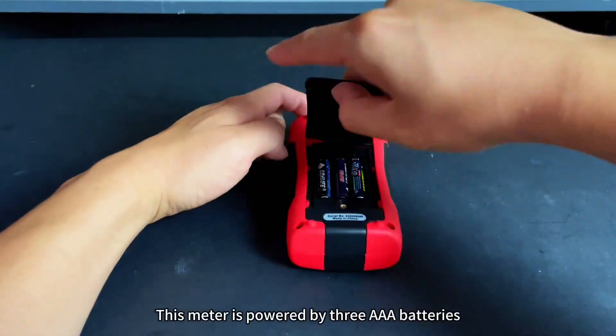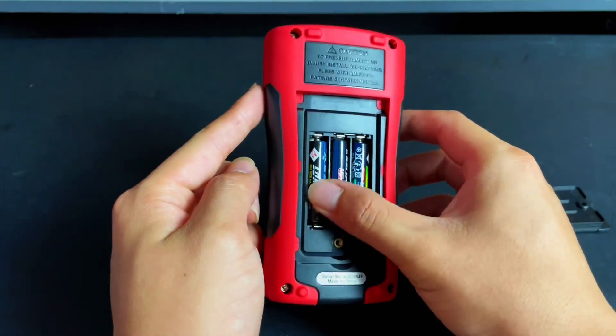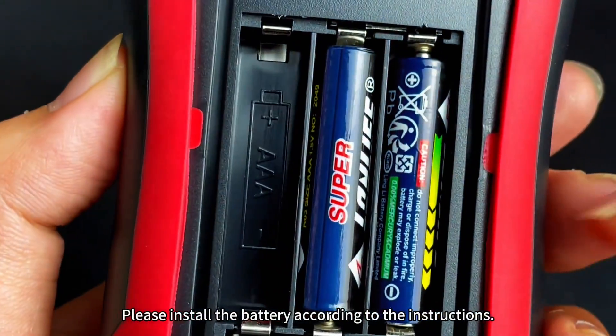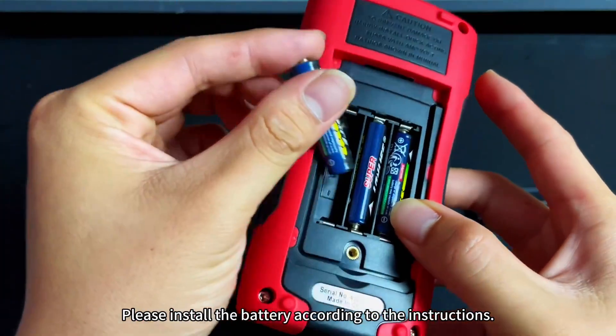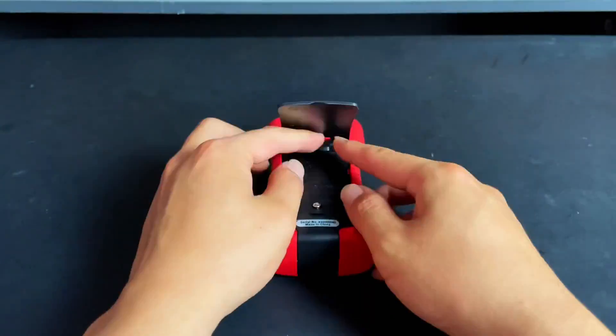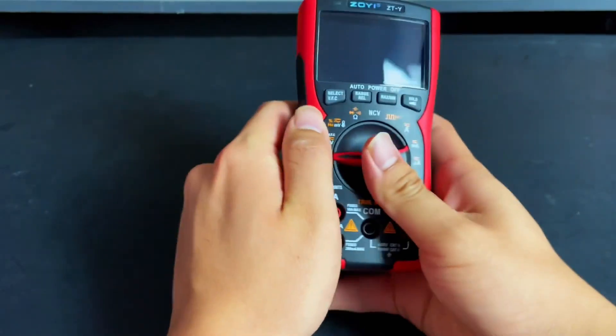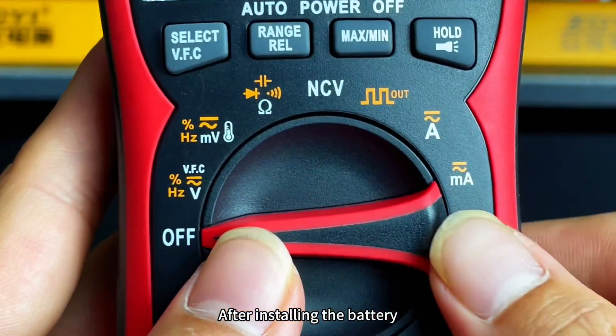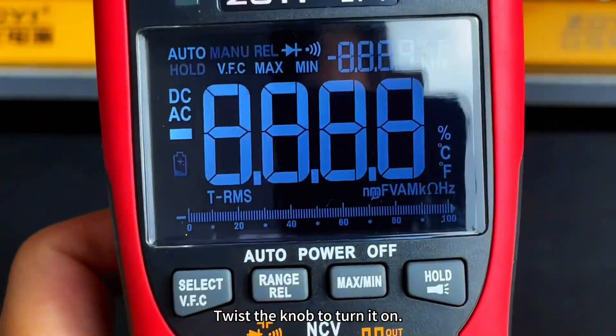This meter is powered by 3 AAA batteries. Please install all the batteries according to the instructions. After installing the battery, twist the knob to turn it on.